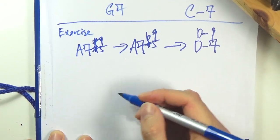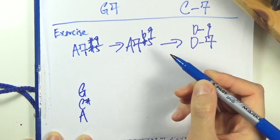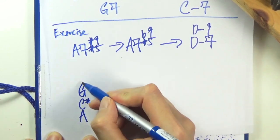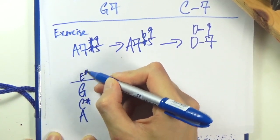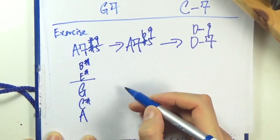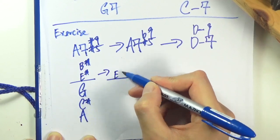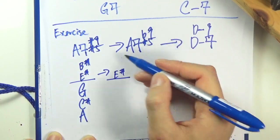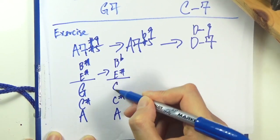Let's realize it. A7, so the shell is A, C sharp, G, and then the altered tensions would be sharp 5 E sharp, and sharp 9 would be B sharp. Going into, let's deal with the tensions first - E sharp would stay, B sharp would go to B flat. You still keep the same shell voicing.